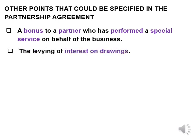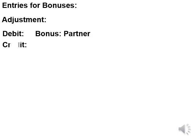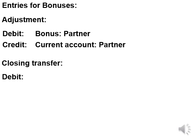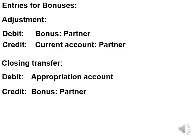Other items that could be specified in the partnership agreement include a bonus paid to a partner. Each partner who receives a bonus will have a bonus account. As part of year-end adjustments, the bonus account will be debited and the current account will be credited. Then as part of the closing transfers, the bonus account will be closed off to the appropriation account — once more, the bonus is used as a fair split of profits. So the adjustment is: debit the bonus account of the partner and credit the current account of the partner; and for closing transfers, debit the appropriation account and credit the bonus account of the partner.